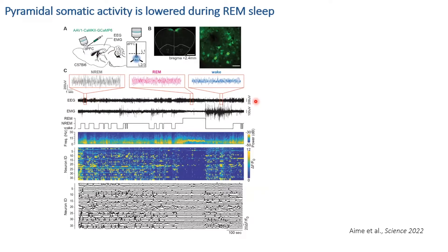I recorded the same population of neurons in the prefrontal cortex during non-REM, REM, and subsequent wakefulness. I focused on pyramidal neurons in the superficial layers — excitatory neurons representing 90% of the population. We used the CaMKII promoter to selectively target these pyramidal neurons and recorded the somatic activity of their cell bodies. Looking at color-coded activity maps, the activity during REM sleep is visibly decreased compared to other states.